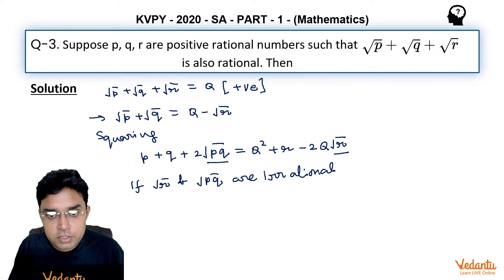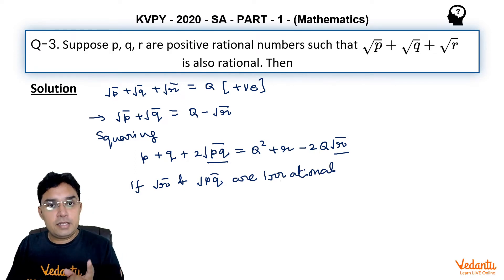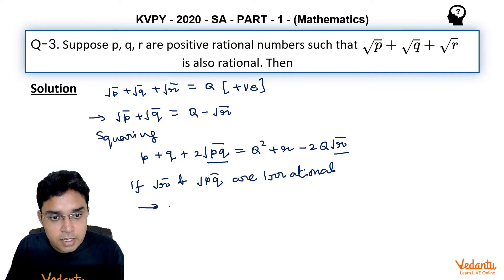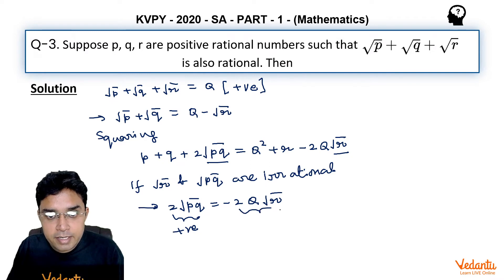then on both sides we should compare rational numbers with rational numbers and irrational numbers with irrational numbers. In that case, 2√pq should equal -2α√r, but you can observe the left-hand side is positive and the right-hand side is negative. This is not possible.